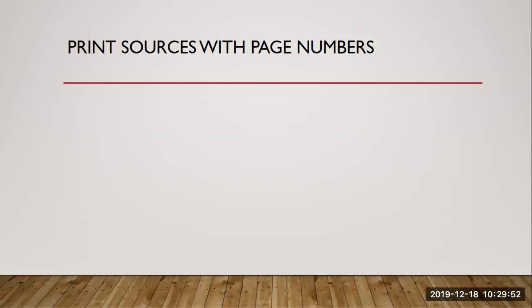If you are accessing a source digitally, the file may be an exact reproduction of an original print source. For instance, a print magazine has made the PDF version of an edition available online for download. If so, you should be able to see original page numbers within the copy and should therefore refer to its page numbers. Let's look at a few examples.